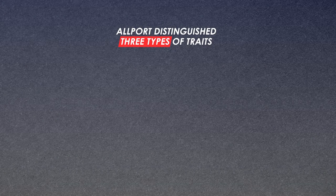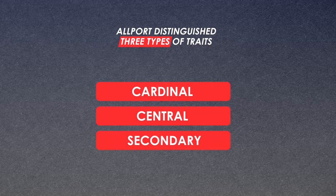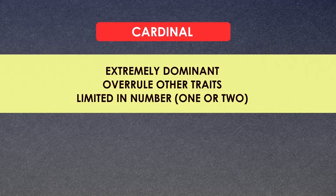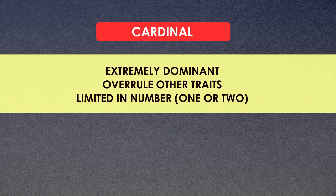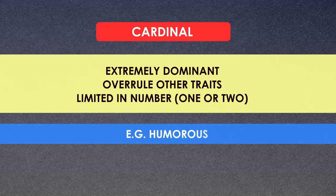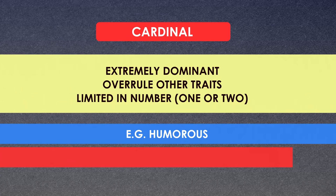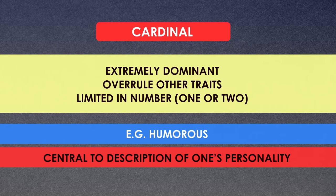Allport distinguished three types of traits: cardinal, central, and secondary. Cardinal traits are primary traits — the major ones — extremely dominant and very important. He says these traits overrule every other trait in a human being, but they are limited in number, generally one or two. For example, if a person is humorous, that means this trait is central to the description of his or her personality.